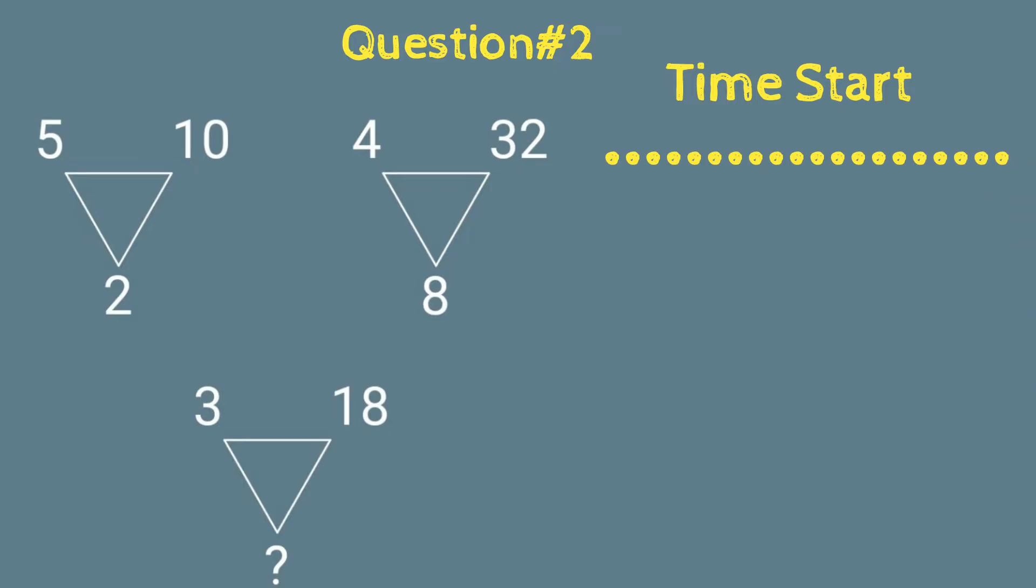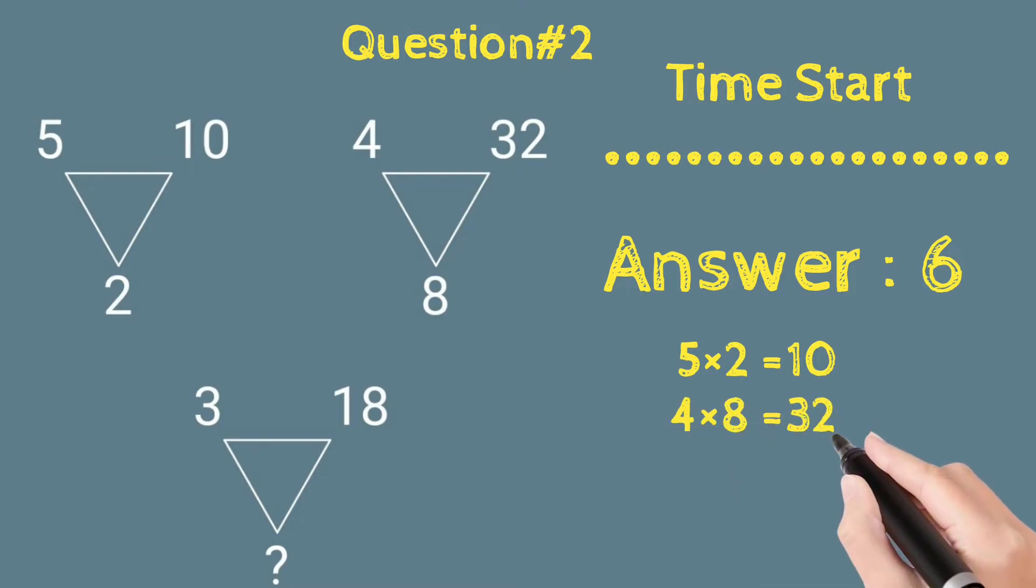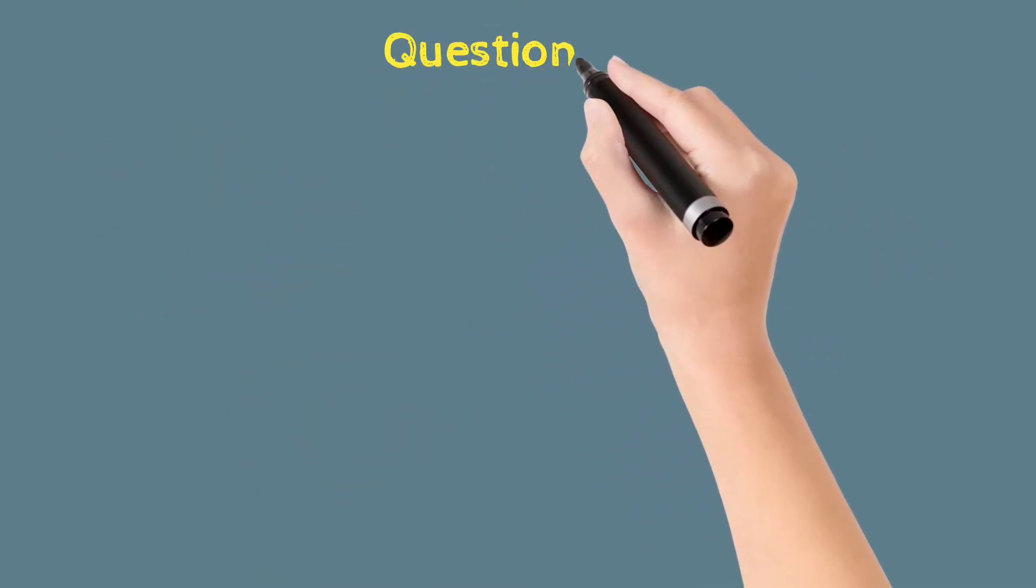So guys, the answer will be 6 because 5 into 2 = 10, 4 into 8 = 32, 3 into 6 = 18. Obviously, and the next question is: